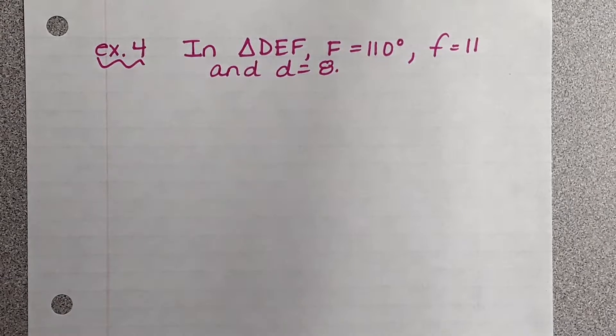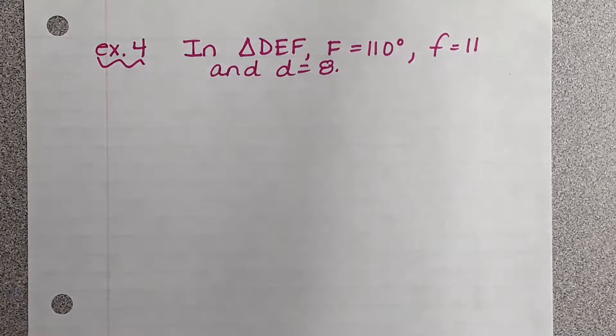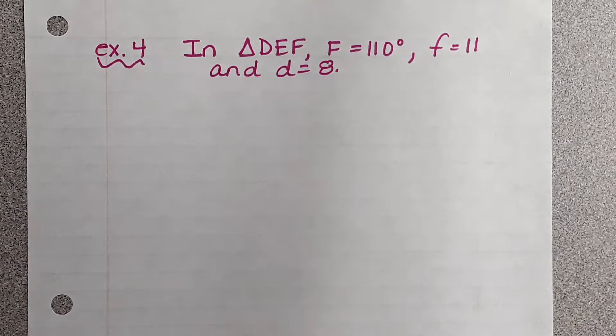What is the first thing that we want to do? Draw a triangle. What type of triangle should you not draw? Right triangle.